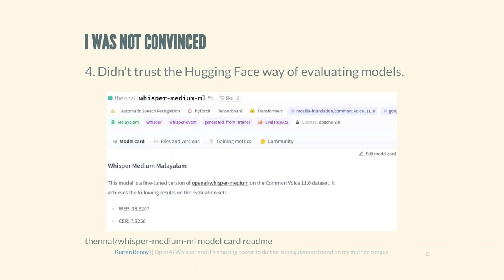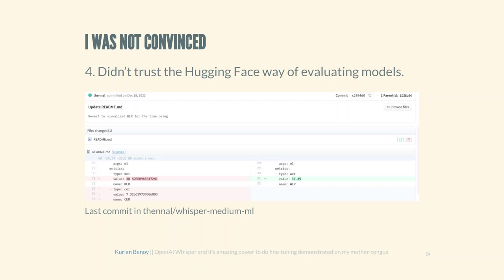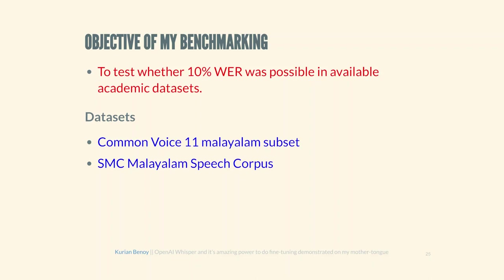The main reason I was not convinced: the winning model's card reported an order rate of 38.62 and a character rate of 7.32. Hugging Face's evaluation method allowed anyone to manually set the metric value to 11.49, so someone could have entered any value. That skepticism was the reason I decided to test whether the 11% WER was actually achievable or not.